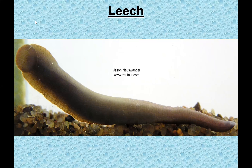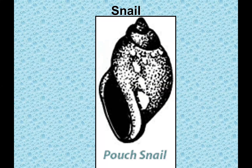Leeches — everyone knows what these are. They're parasites that attach to a host and suck blood. In Pennsylvania, our leeches can attach to humans but cannot pierce our skin; the species in the Southeast US can. Leeches are obviously not a good water quality indicator — they're tolerant of pollution, so we don't want to see too many. Finally, the pouch snail: remember the gill snail had its opening on the right. The pouch snail has its opening on the left when the apex is pointed up — it's tolerant of pollution, meaning it's not a good sign.